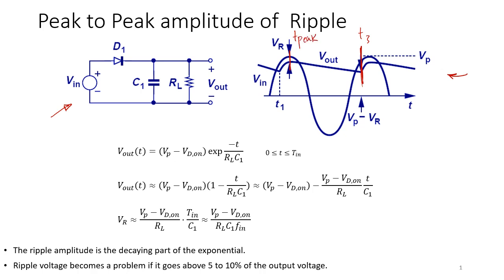What happens here? This is a natural response of an RC circuit. The natural response of an RC circuit is going to be V0 times e to the power of negative T over tau. Since this is an RC circuit, it's going to be V0 times e to the power of negative T over RC. So Vout is going to be Vout at time 0, or at the time that the discharge starts, times e to the power of negative T over RC.